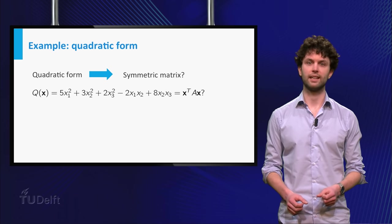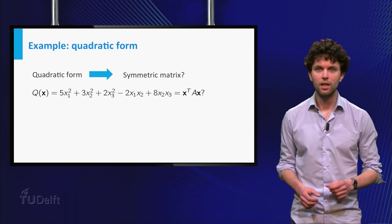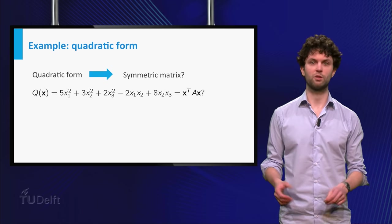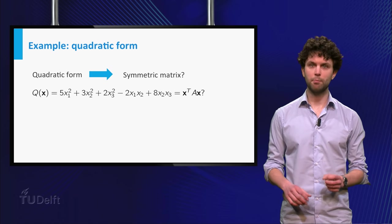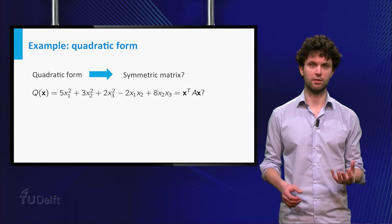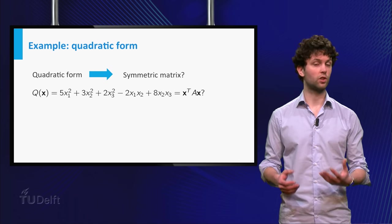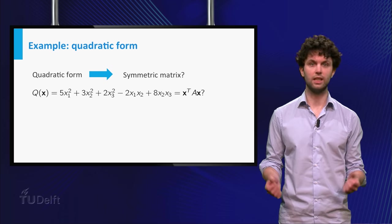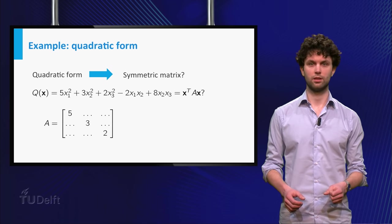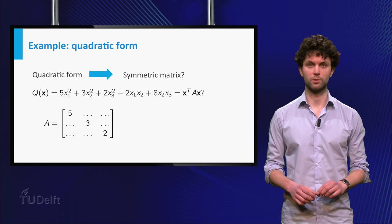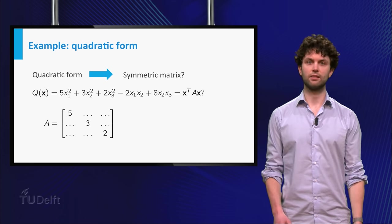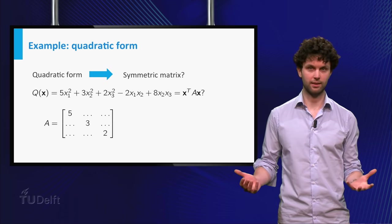To make things concrete, take a look at this function. Note that this is a function on R³ and we suspect it to be a quadratic form. That means that we have to find the appropriate symmetric matrix A, such that x transpose times A times x equals this function. Well, the coefficients of the square terms x₁ squared, x₂ squared and x₃ squared enter the diagonal of A in this particular order.